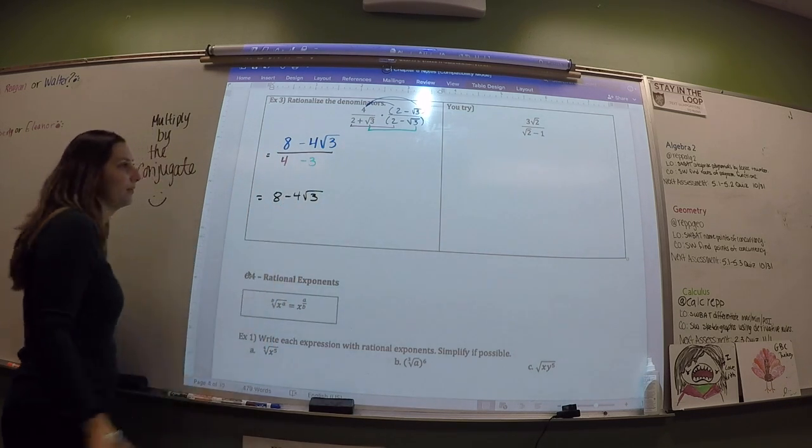Now we have 2 times the fourth root of 2, and 5 times the fourth root of 2 — both are fourth roots of 2. So 2 bananas plus 5 bananas equals 7 bananas, giving us 7 times the fourth root of 2. Then we have the minus 2 times the fourth root of 3, which doesn't have any like terms, so it just stays there.